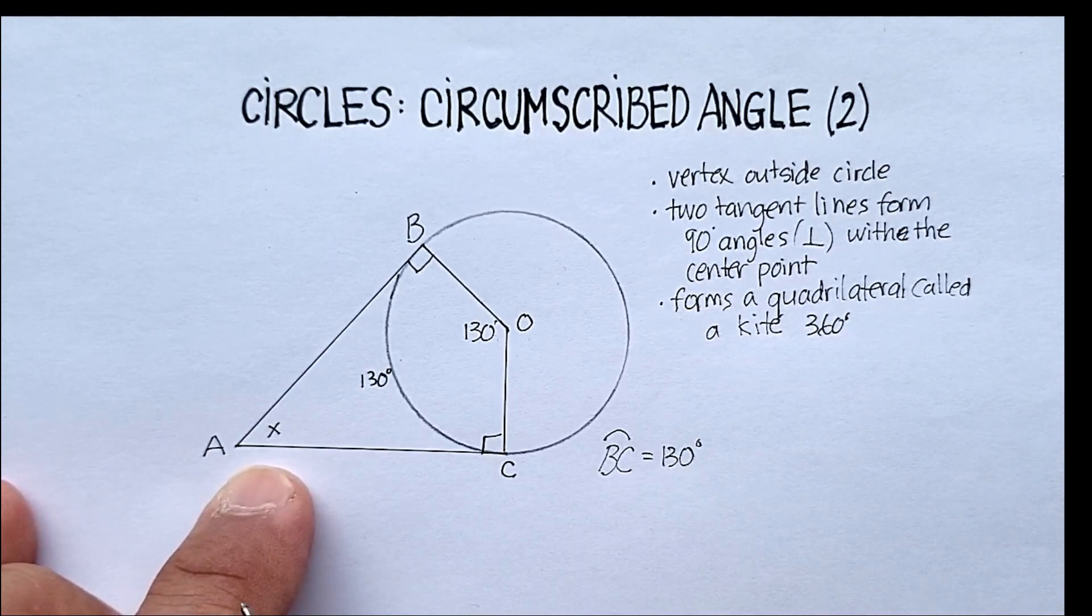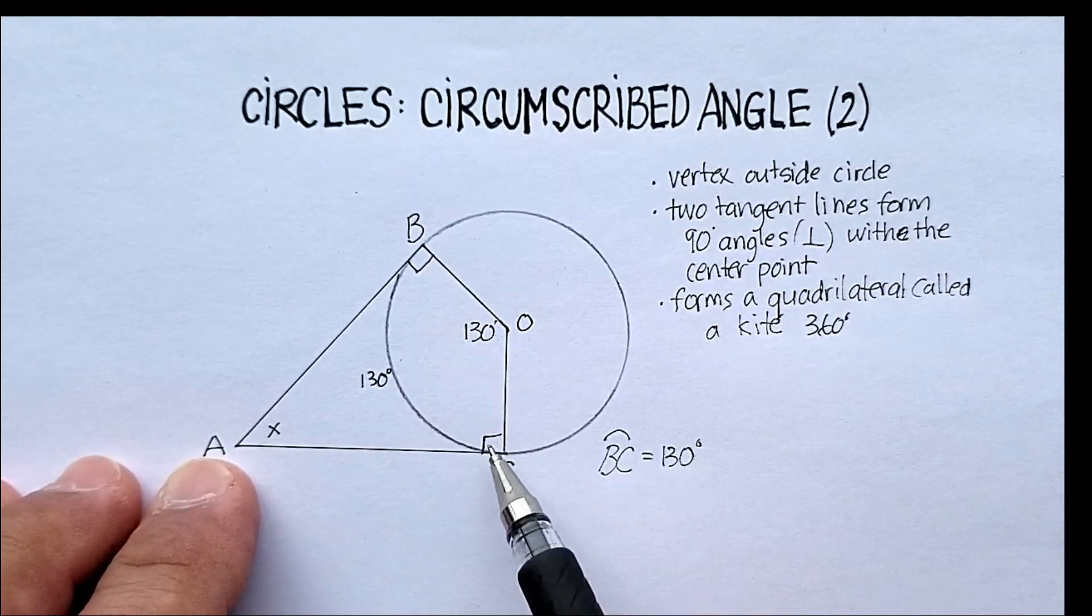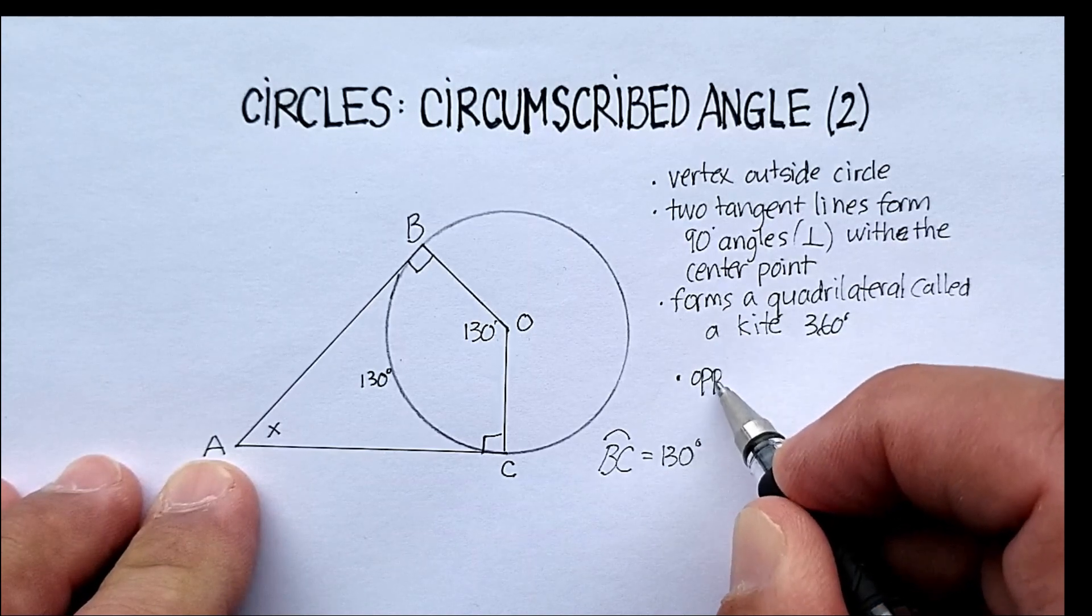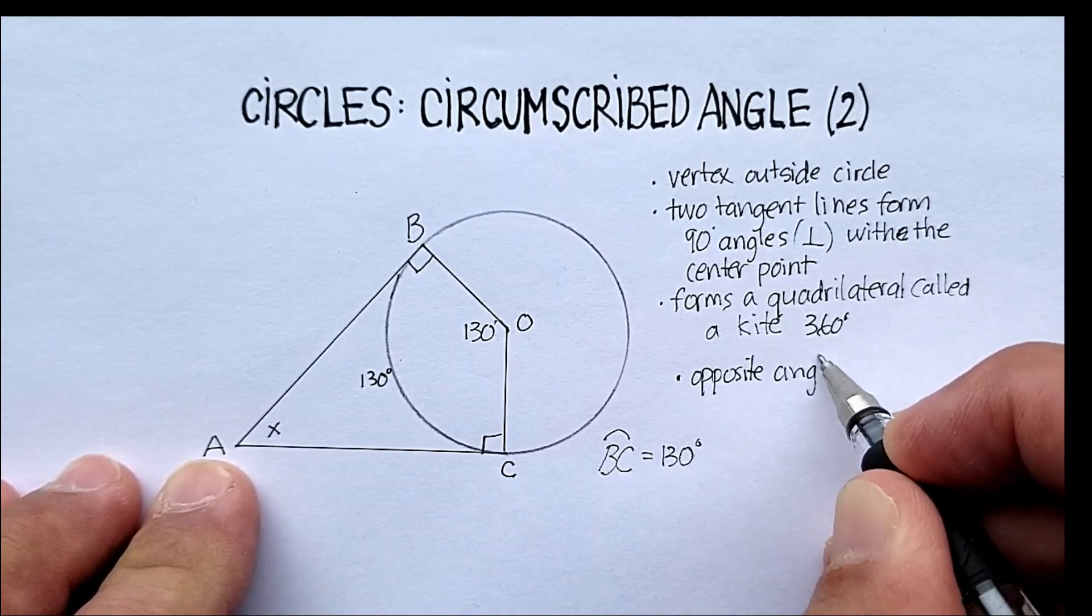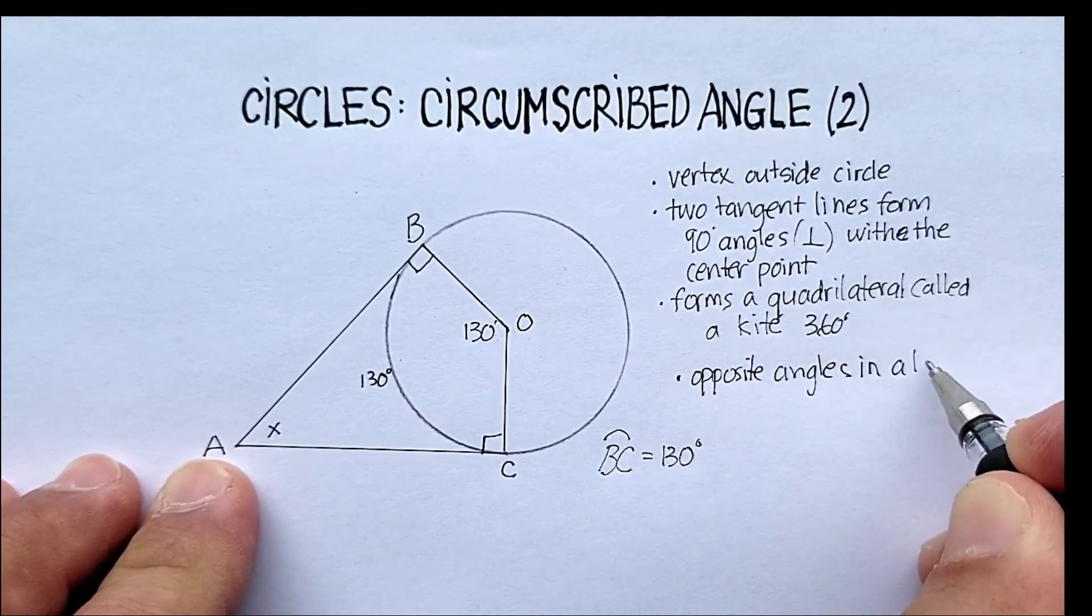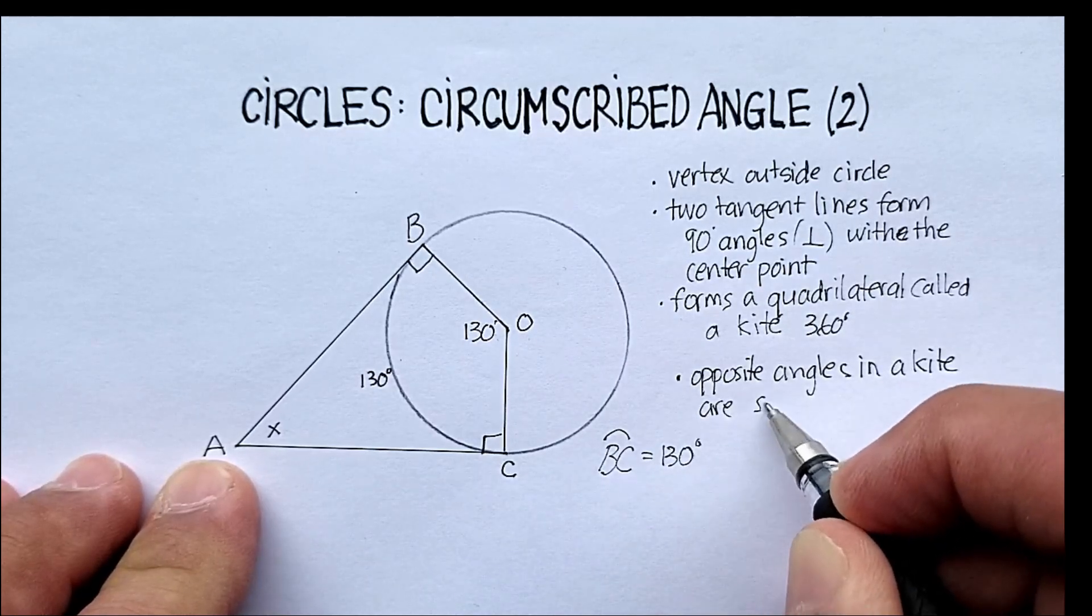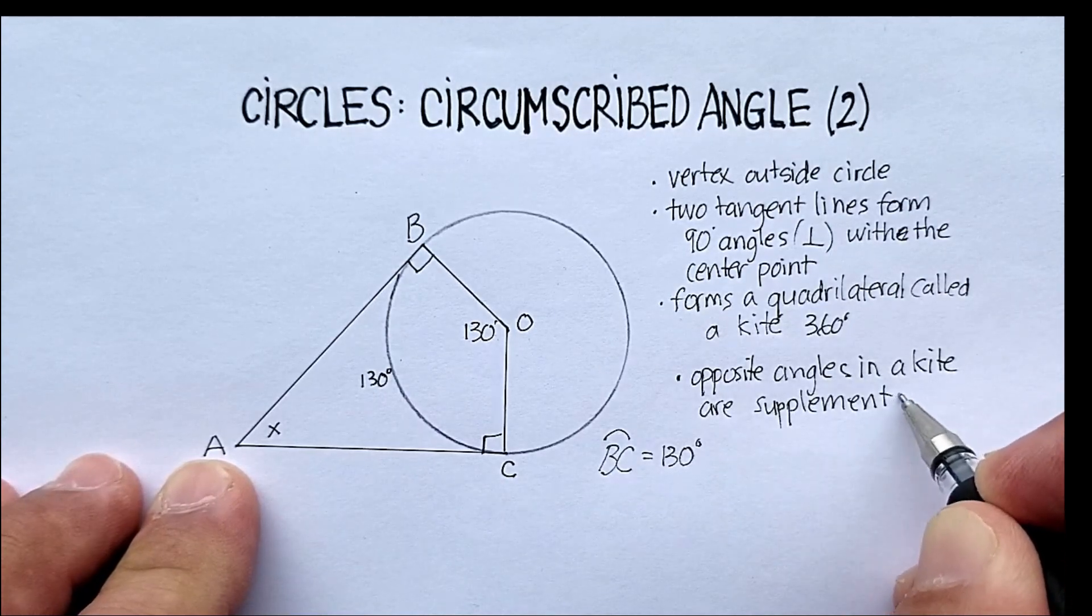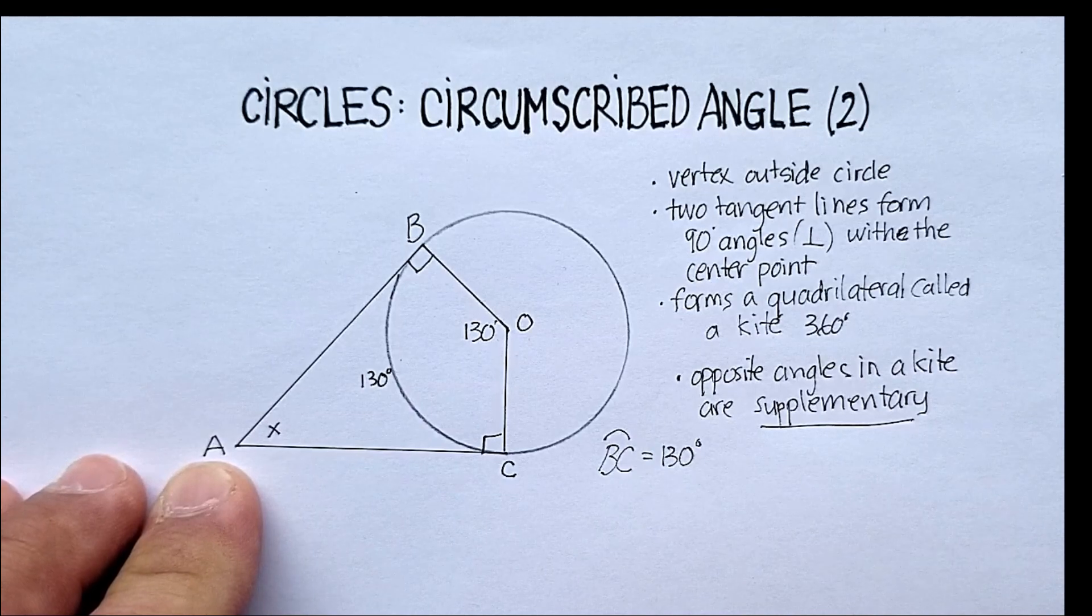The other way to do this is the second method. So I know that opposite angles, and this is the important part of this particular video, opposite angles in a kite are supplementary. So remember that word, supplementary means adds up to 180 degrees.